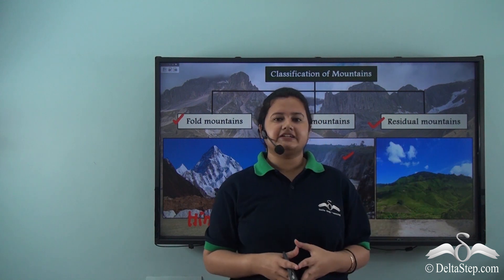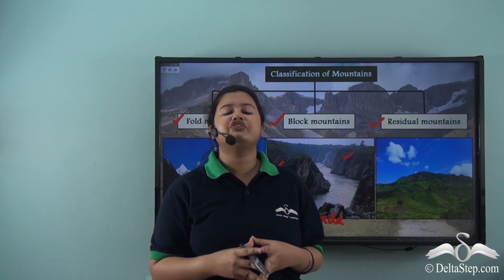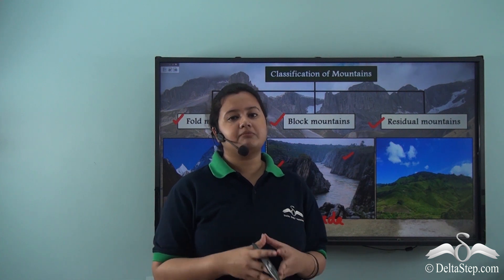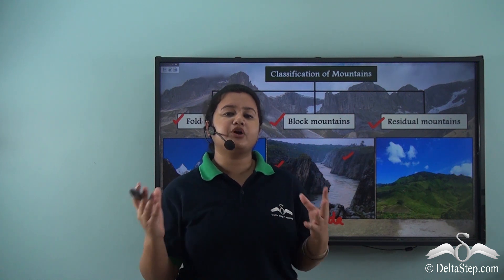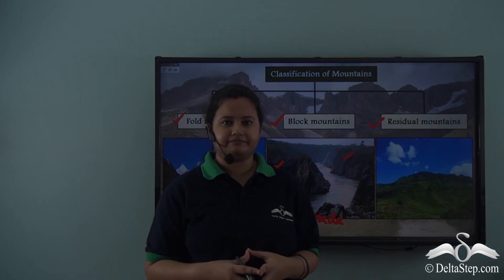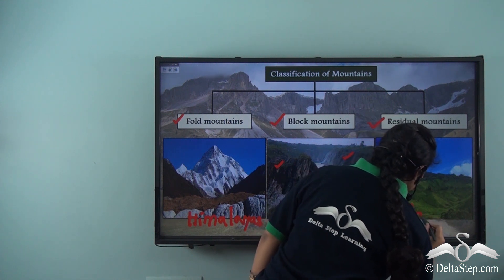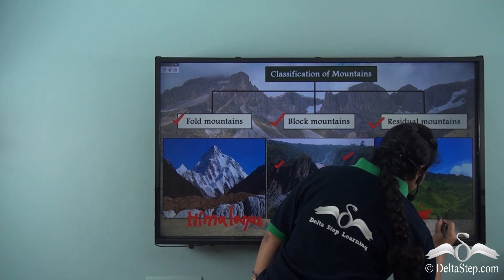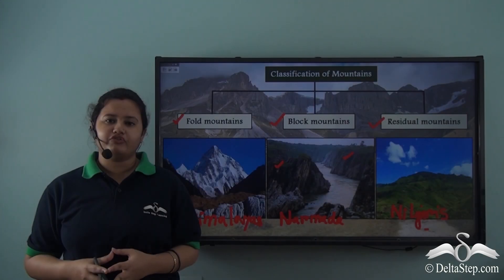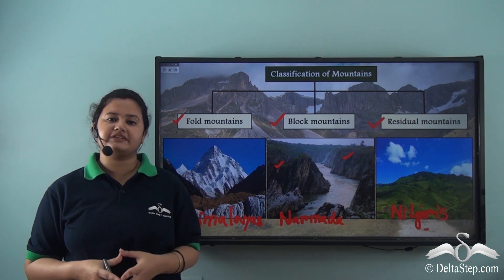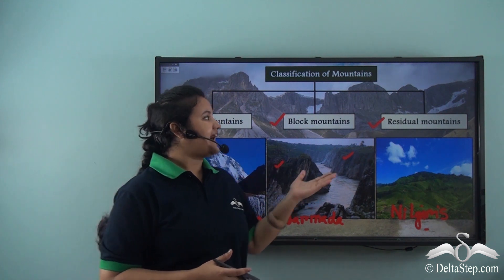The third category is the residual mountains. As I have already discussed, residual mountains are the residue or the remains of ancient mountain ranges. These ancient mountain ranges were once very huge and they are continuously denuded by natural forces, because of which their height has reduced. This is the picture of Nilgiris and, as I have already mentioned, Nilgiris is an example of a residual mountain. Therefore, we can classify the mountains into three types on the basis of their process of formation: fold mountains, block mountains, and residual mountains.